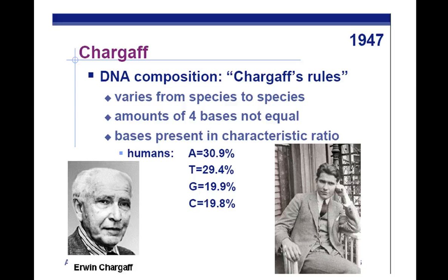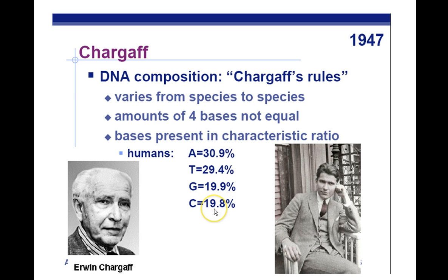The next experiment is Chargaff. Chargaff discovered that the percentages of adenines and thymines were about equal, and guanines and cytosines were about equal — leading to Chargaff's rules. To summarize: A equals T and G equals C as far as percentages in a DNA molecule. The way you'd use this on a test: if given the percentage of guanines — say 20% — cytosines are also 20%. That's 40% of total nucleotides, leaving 60%, which is split equally between adenines and thymines since they pair in a one-to-one ratio. Given one nucleotide percentage, you can figure out the other three.